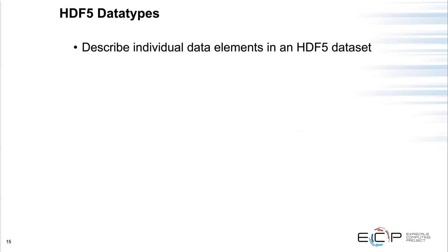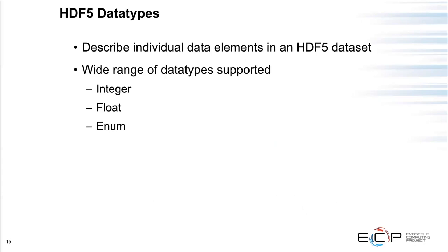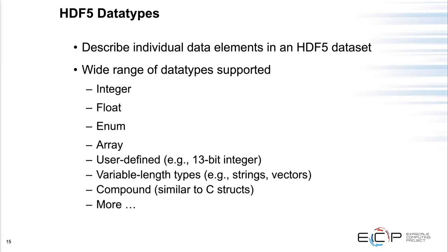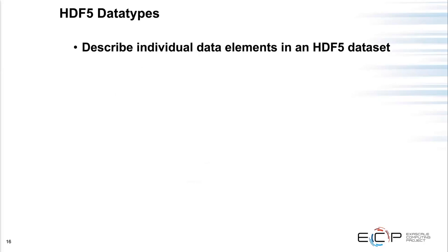Data types describe individual elements in a dataset. They must be homogeneous across the entire array. HDF5 supports a broad range of types: typical integers and floats, enums, arrays, variable-length sequences (like strings and vectors), and compound types (like C structs). You can even define your own 17-bit floating point type if necessary. These describe the individual elements in datasets or attributes.